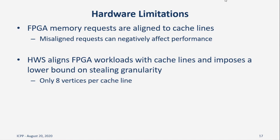The final challenge is a hardware limitation that has been identified in the past for these platforms. FPGA memory requests to partial cache lines can be detrimental to its performance. Therefore, we must align all data requests. This simply imposes a lower bound on the granularity at which HWS can operate. In the context of graph processing, this amounts to 8 vertices per cache line, which is not likely to adversely impact load bounds. More details of these challenges and our solutions can be found in the paper.